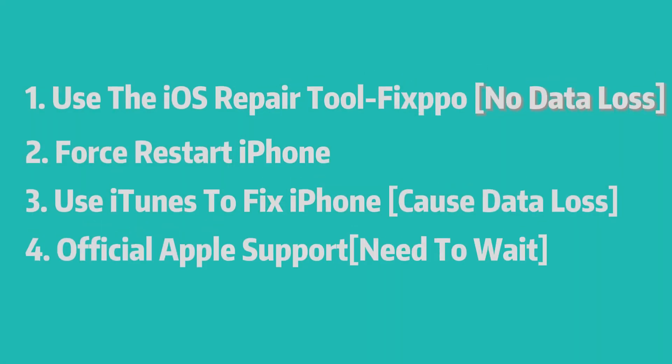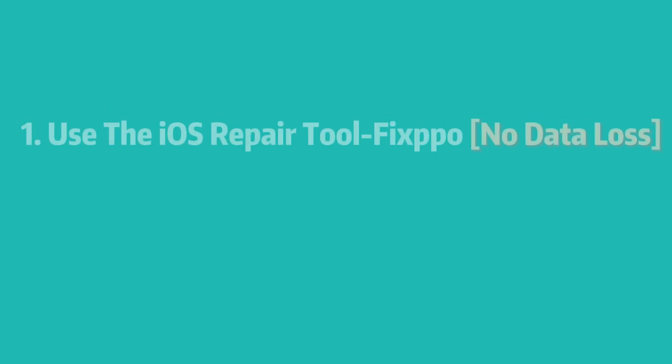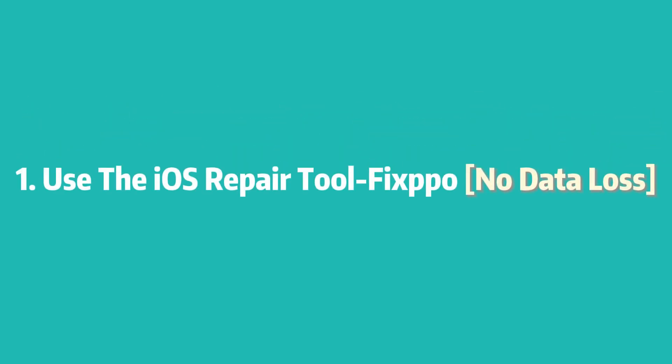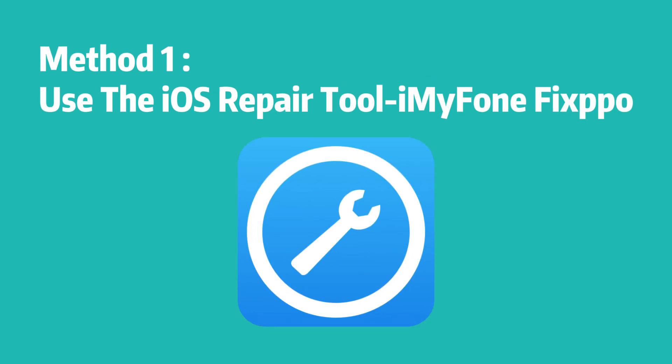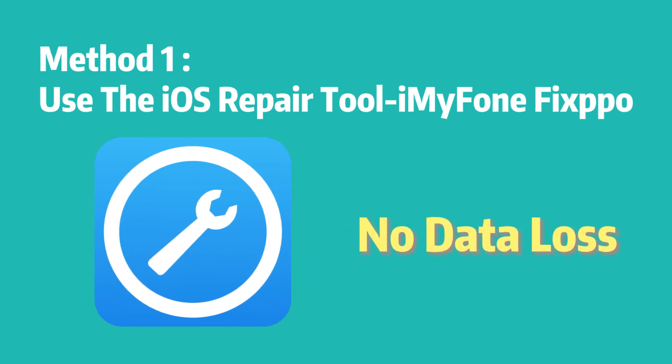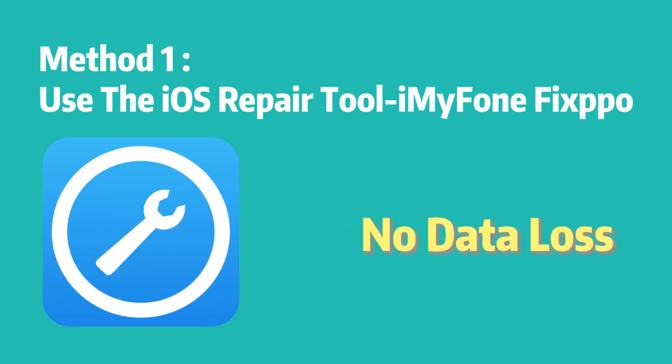This video will introduce you to 4 methods, but for your convenience, we will first present the quickest method that won't lose your data. Method 1: Use the iOS repair tool Fixbo. Fixbo can fix your iPhone screen black lines and no data will be erased.